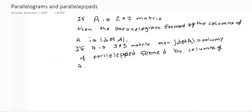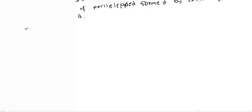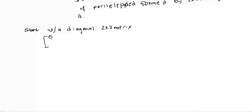So let's start with a 2 by 2 matrix — specifically, a diagonal 2 by 2 matrix. Let's say we have the matrix with entries A, 0, 0, D. And let's look at the absolute value of its determinant, which is the absolute value of A times D.